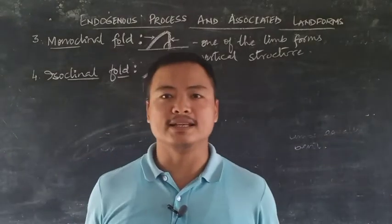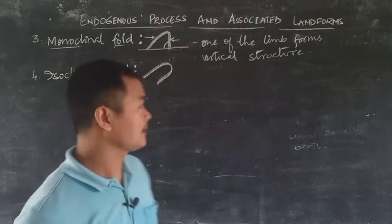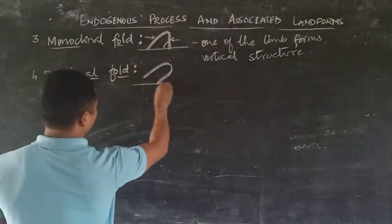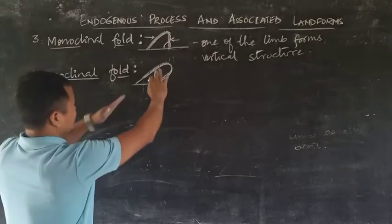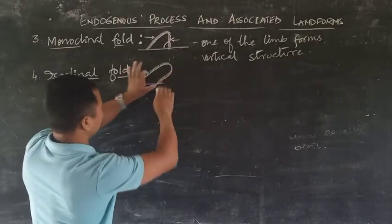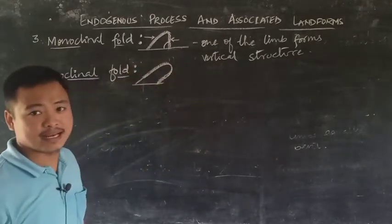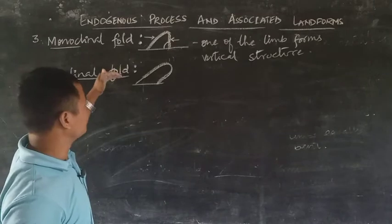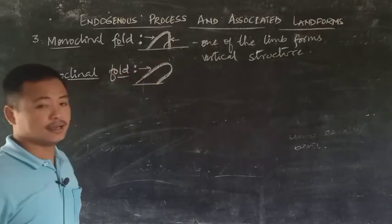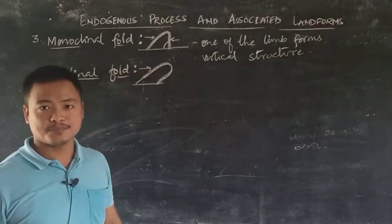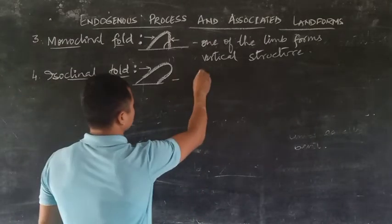The fourth type is the isoclinal fold. In an isoclinal fold, both limbs are completely inclined to one side because the force is applied maximum from the other side, resulting in the fold being tilted entirely.